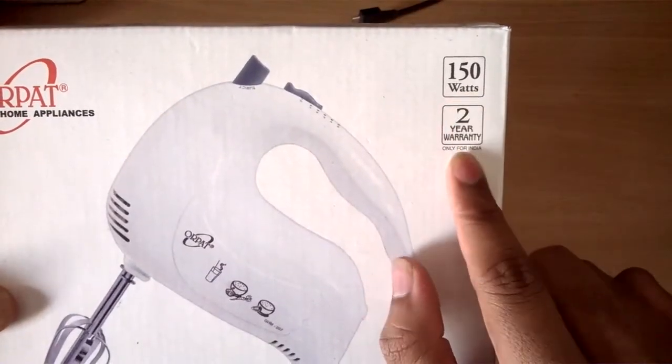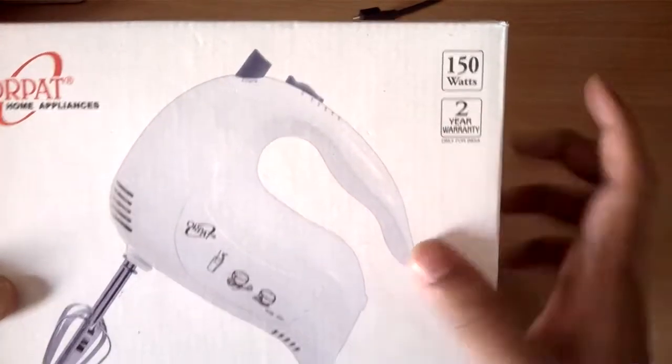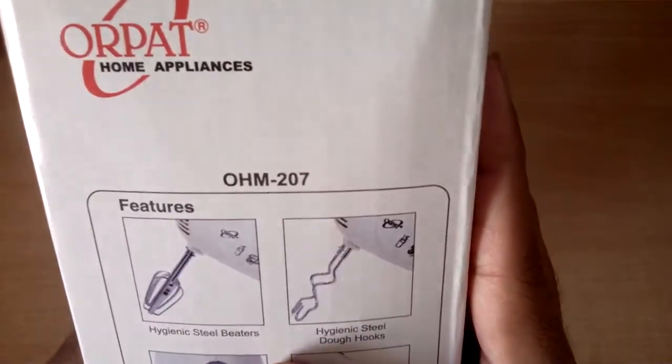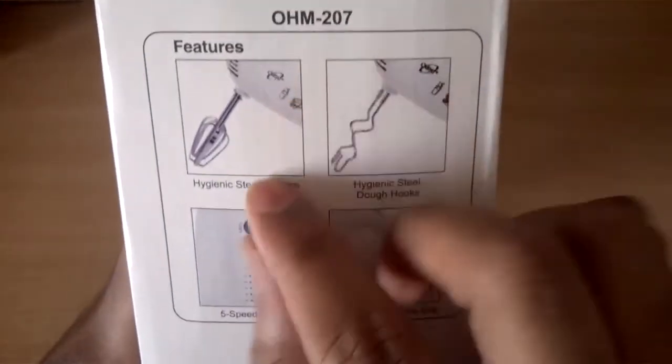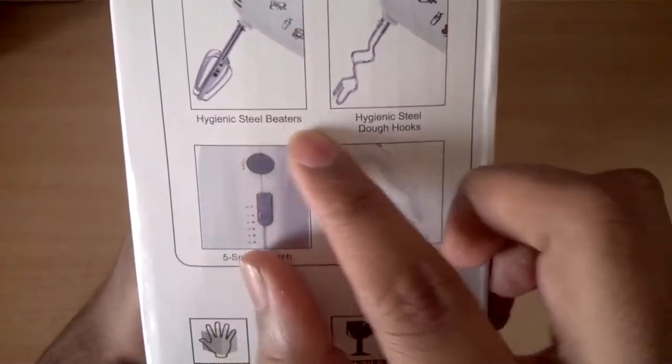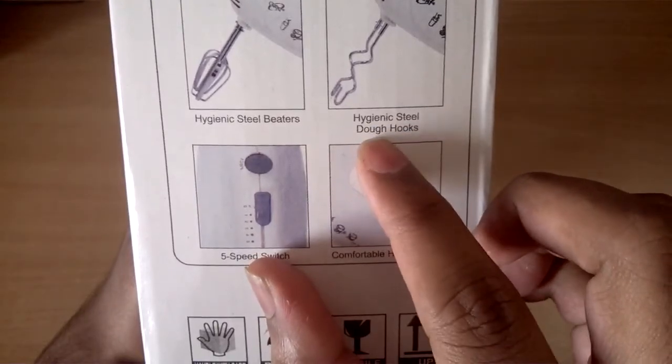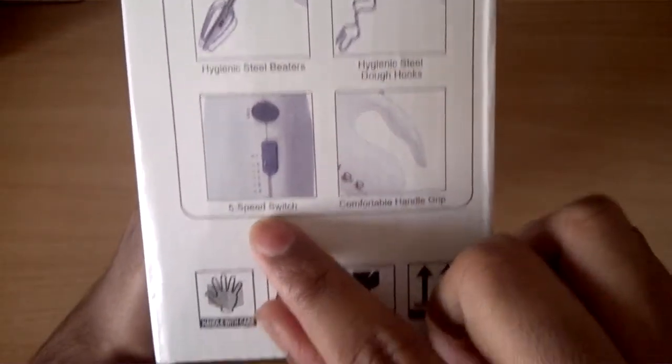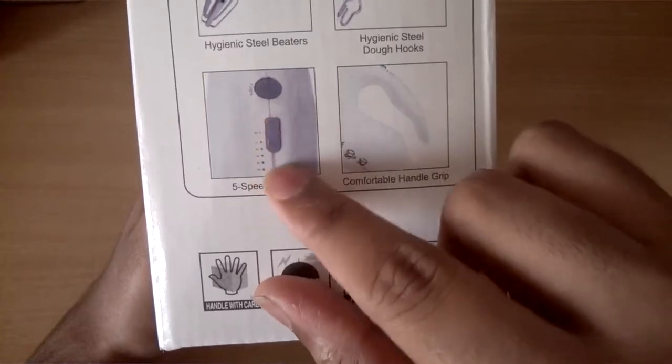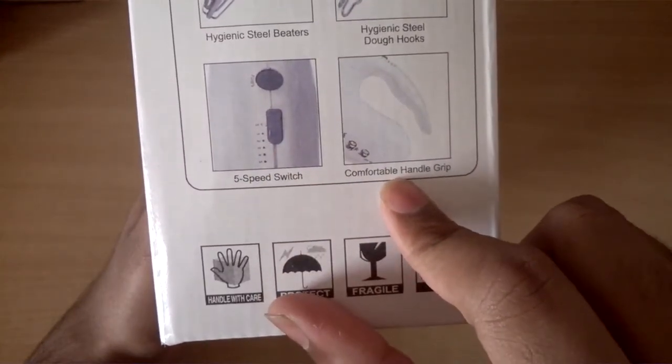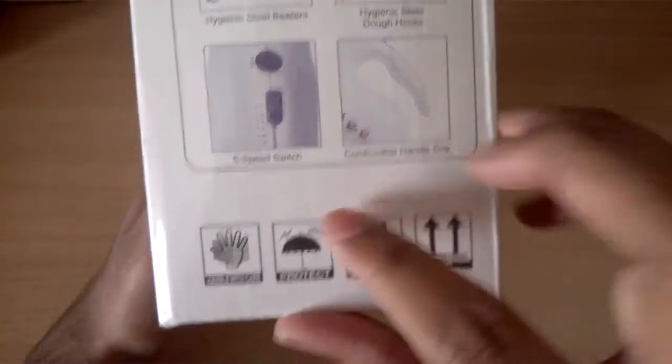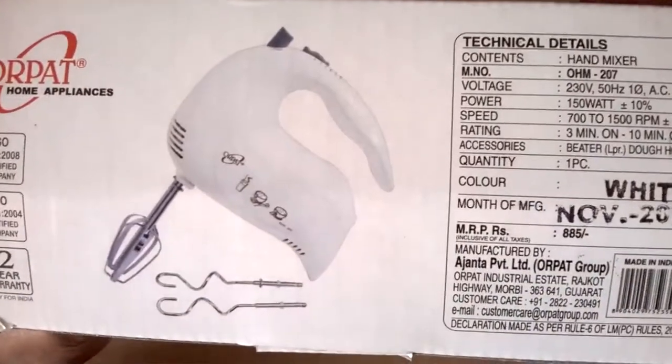It has a 150 watt rating, two year warranty only for India. It's from Ajanta Electronics, Orpat is a brand of Ajanta Electronics. The model number is OHM 207, it has hygienic steel beaters, hygienic steel dough hooks, a five speed switch so you can vary the speed, and it has a comfortable handle grip.